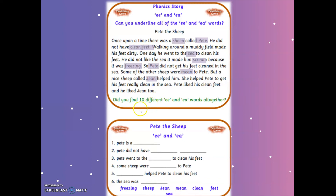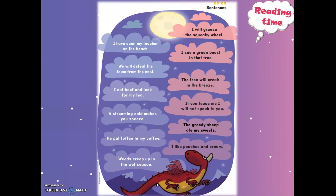Now let's answer these questions. Pete is a — was Pete a dog? No, he was a sheep. Pete didn't have clean feet. Pete went to the sea to clean his feet. Some sheep were mean to Pete — they weren't nice. A nice sheep called Gene helped Pete to clean his feet. And the sea was freezing — that's why Pete didn't like it.